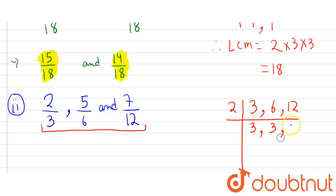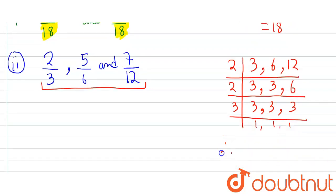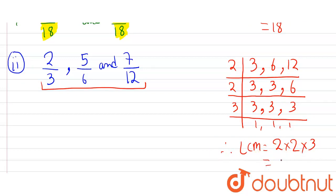For LCM of 3, 6, and 12: take 2 — three remains the same, six becomes three, twelve becomes six. Take 2 again — three remains the same, three remains the same, six becomes three. Take 3 — we get remainder 1, 1, 1. Therefore LCM is two into two into three, which is four into three, that is 12. Therefore LCM is 12.